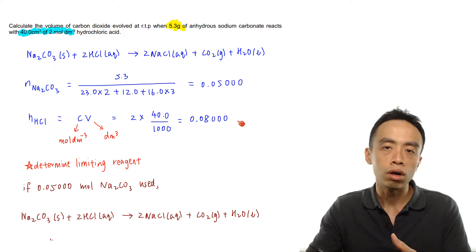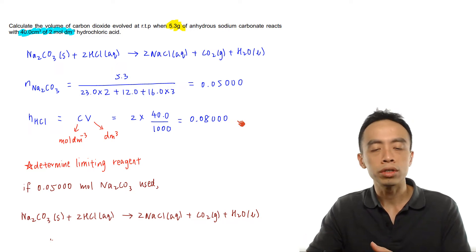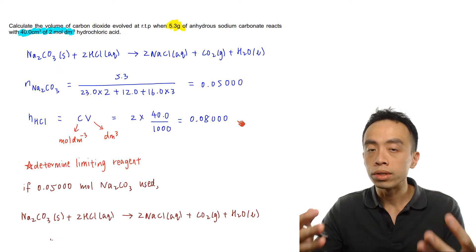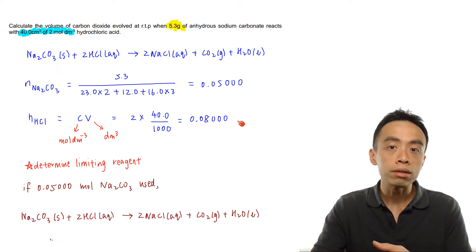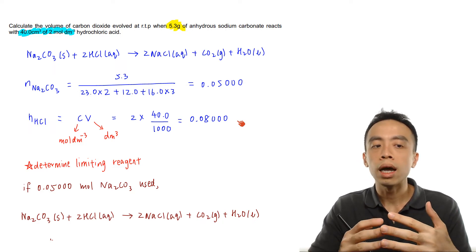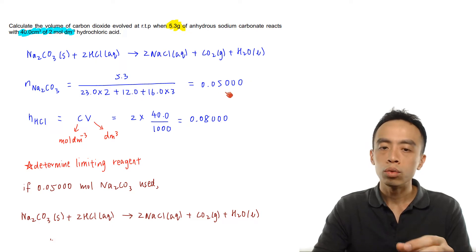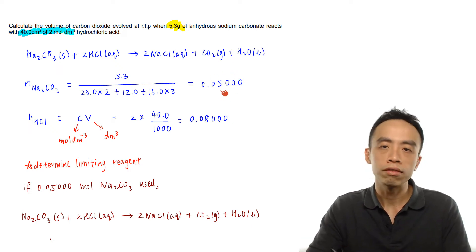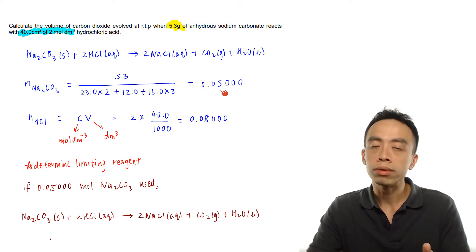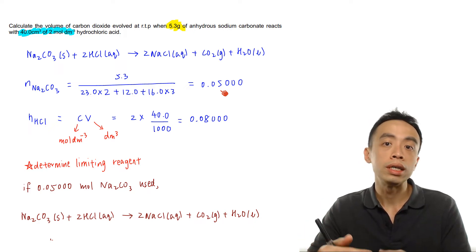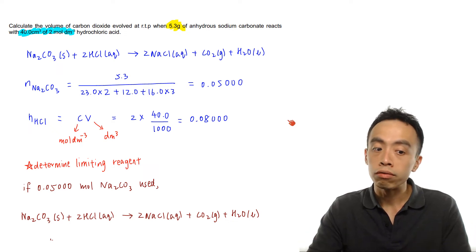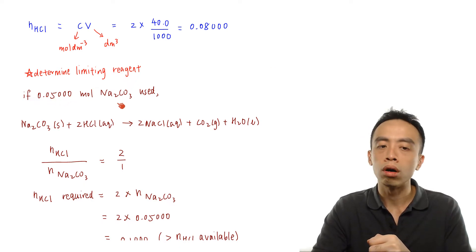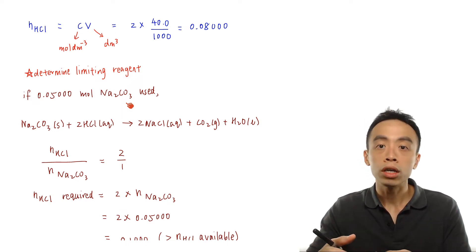Once we have the moles of both reactants, we can determine the limiting reagent. The technique is straightforward: if we use up 100% of one reactant, how much of the other is required? My practice is to use the reactant with the smaller number of moles — in this case, 0.05 versus 0.08, so I use 0.05. If we use 100% of sodium carbonate, we calculate how much HCl is required.